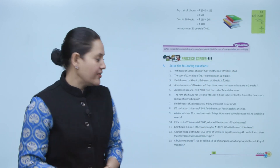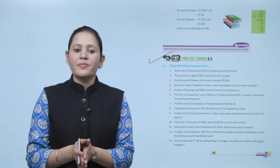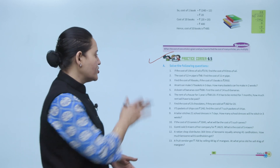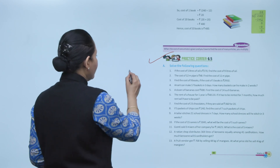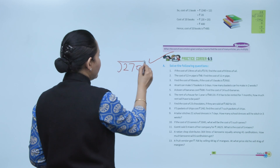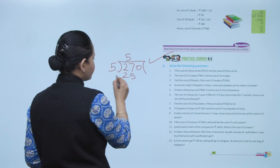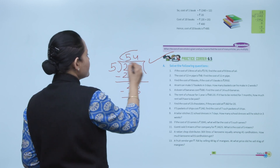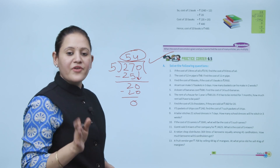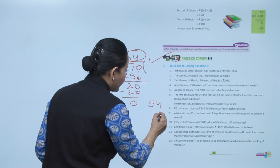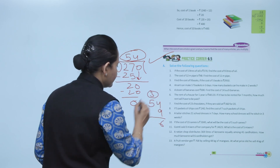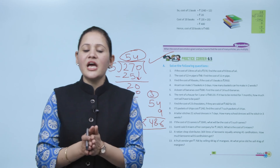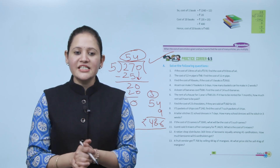Practice corner 6.5: if the cost of 5 litres of oil is rupees 270, find the cost of 9 litres. First find the cost of 1 litre: 270 ÷ 5 = rupees 54. Then cost of 9 litres = 54 × 9 = rupees 486. Here we have used the unitary method. Practice all the questions of this exercise.